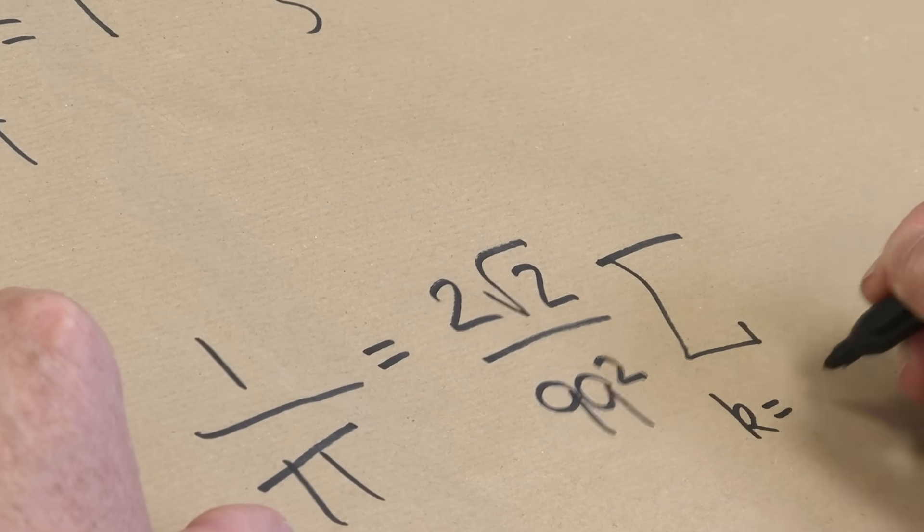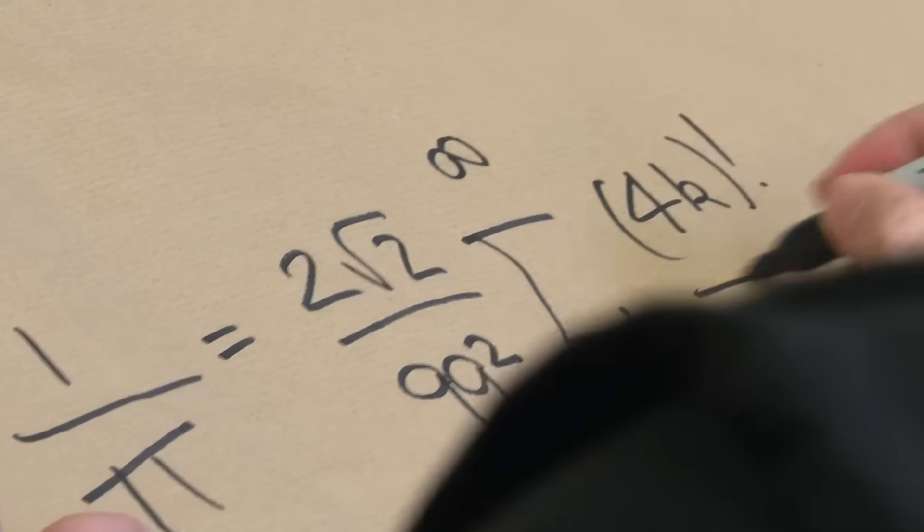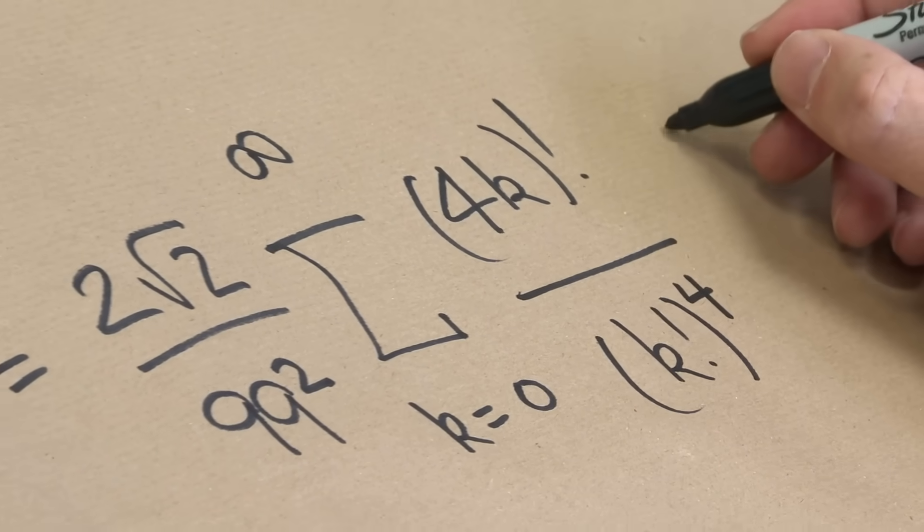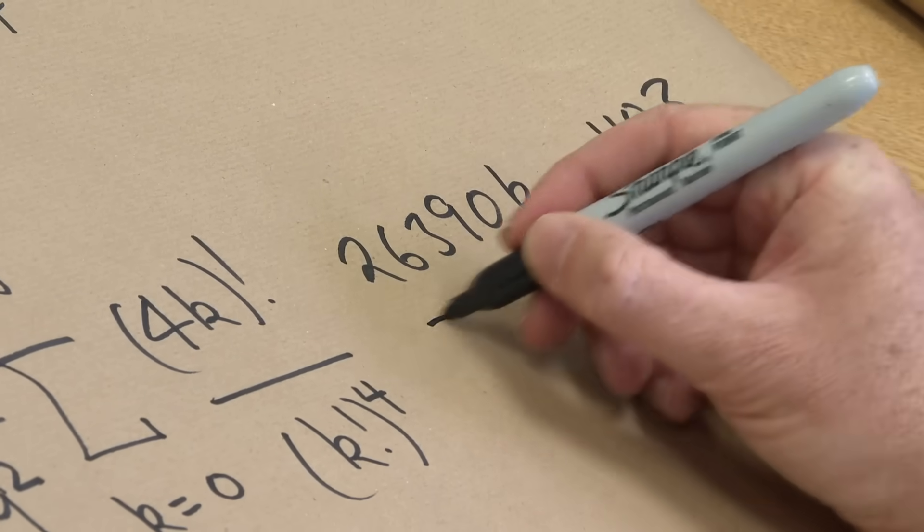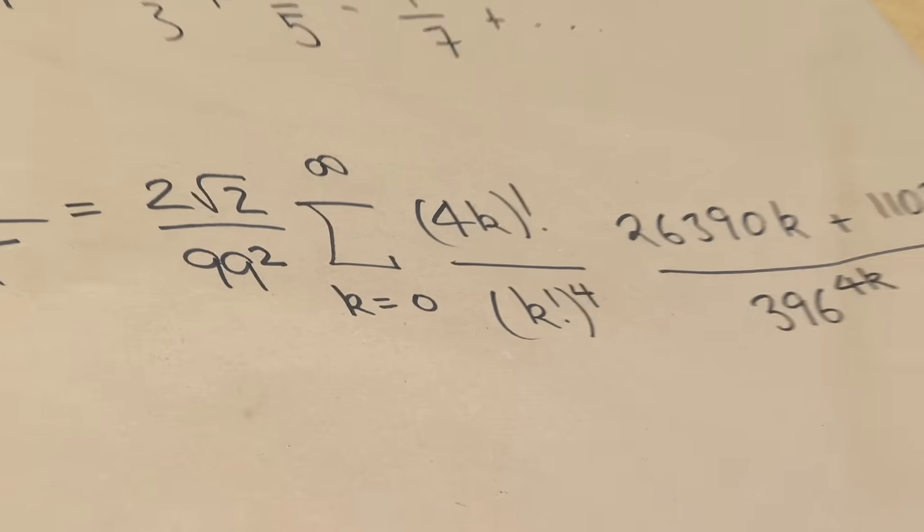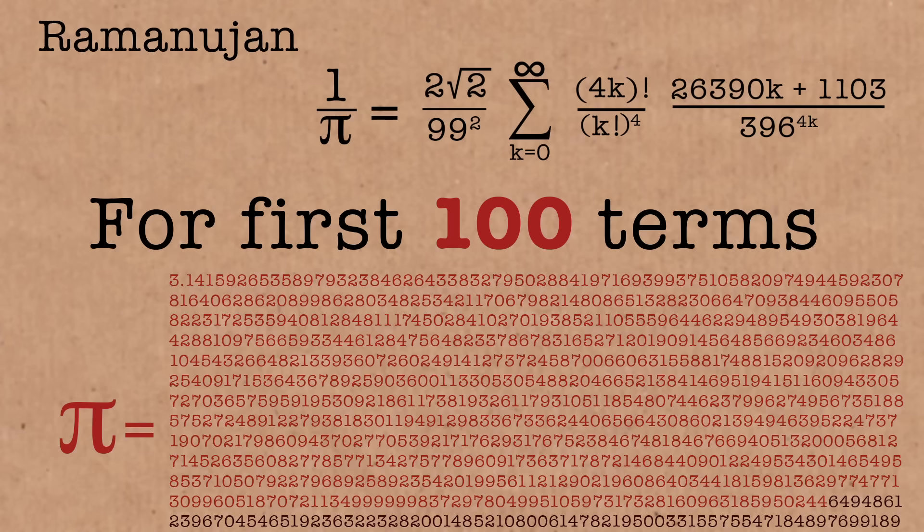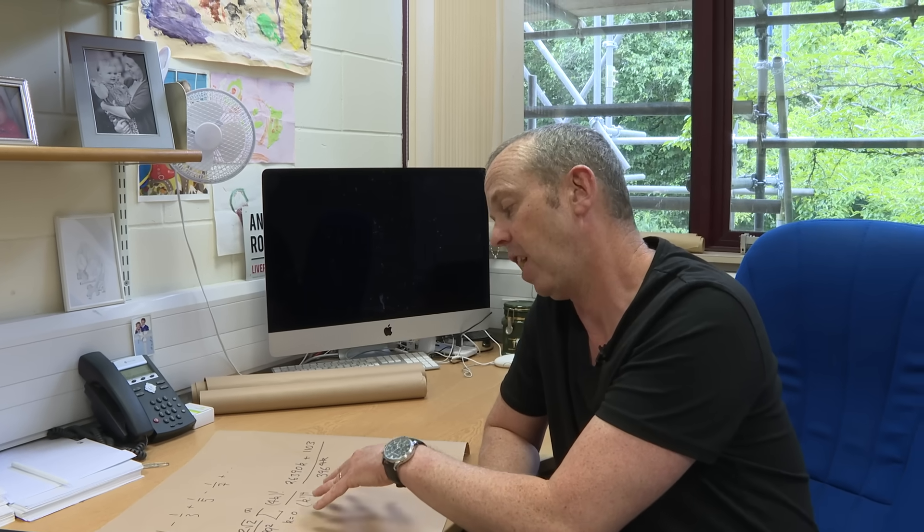Ramanujan's one was actually for 1 over Pi. And it goes like 2 times the square root of 2 over 99 squared, sum over k equals 0 up to infinity, 4k factorial, k factorial to the fourth, 26390k plus 1103, over 396 to the fourth k. So this is an expression that Ramanujan came up with to approximate Pi.